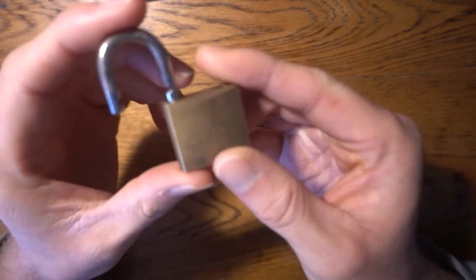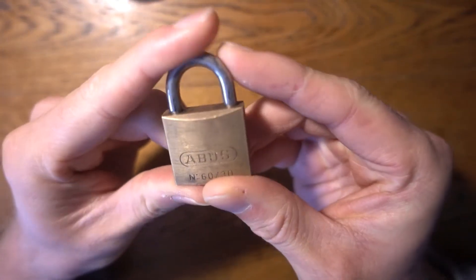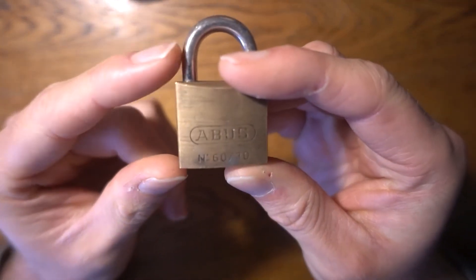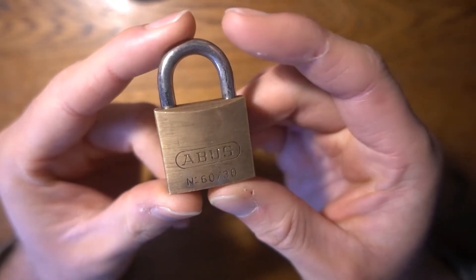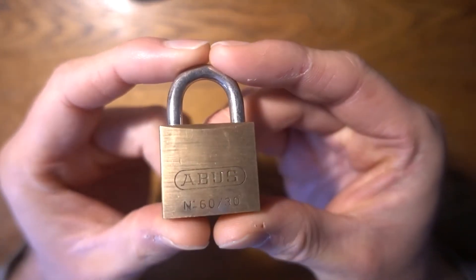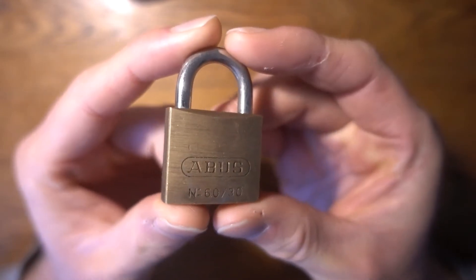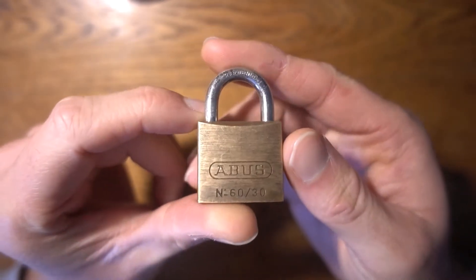This is, let's lock it up, this is the Abus N60x30. I think 60mm and 30mm, I believe, makes sense.